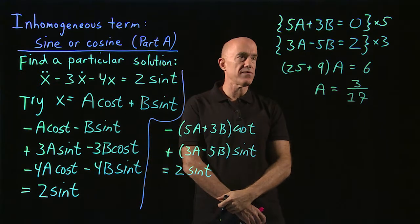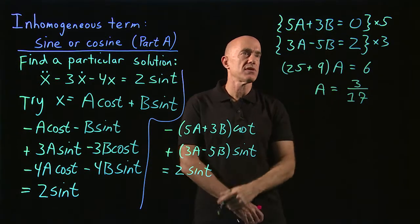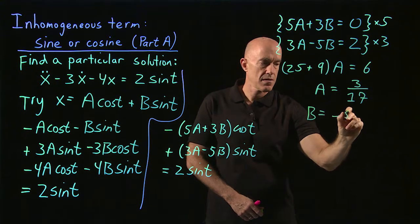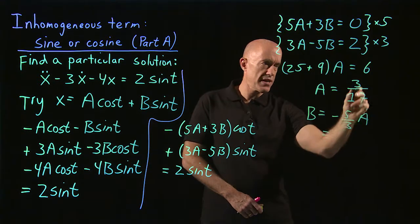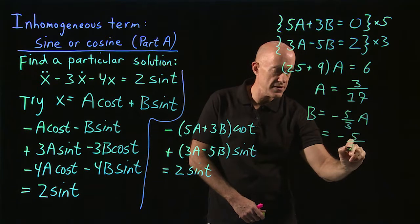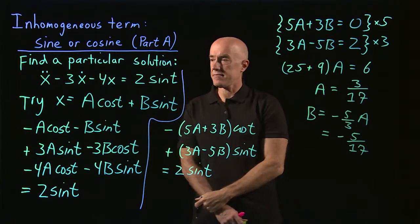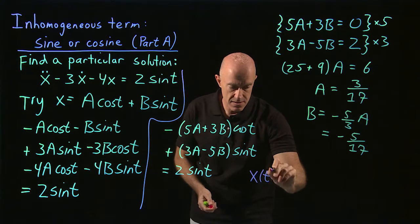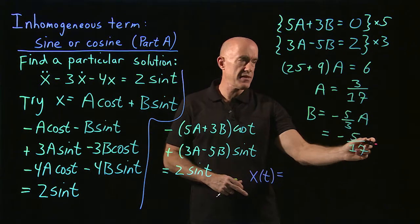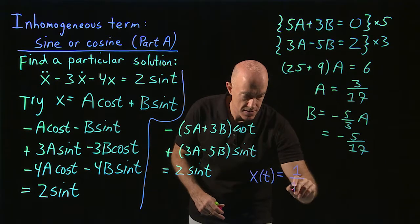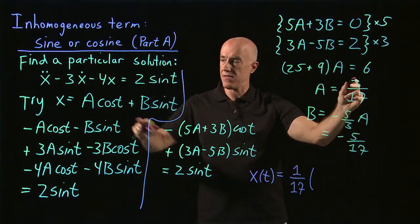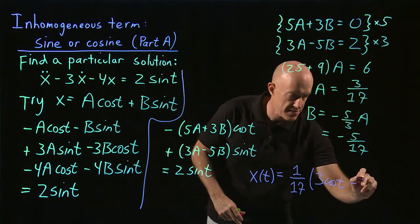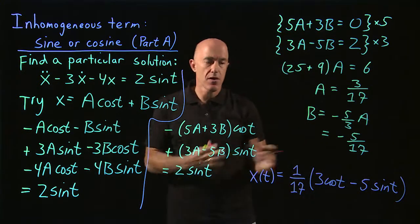Then we can figure out what b is, maybe from the first equation. So b equals minus 5 over 3 times a. The 3 will cancel, giving b equals minus 5 over 17. So we found a and b, and we have our solution: x of t equals 1 over 17 times open parenthesis 3 cosine t minus 5 sine t close parenthesis.